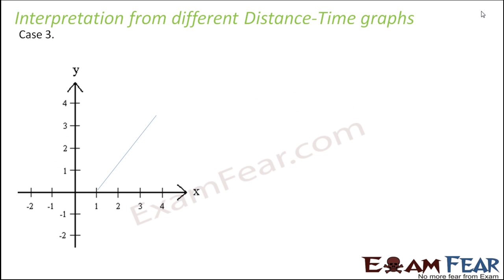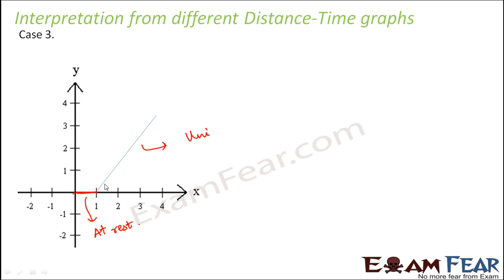In case 3, the graph is similar but does not pass through the origin. Initially, as time was increasing, the distance was not increasing — so the object was at rest for that portion. Only after that did the distance start increasing, and when it started moving, it moved uniformly. So whenever you have a straight line portion, it shows uniform motion, but the initial flat portion tells you the object was at rest.